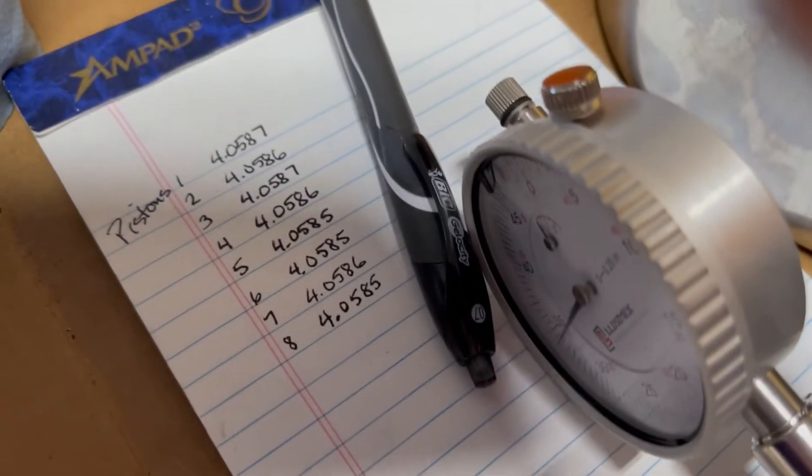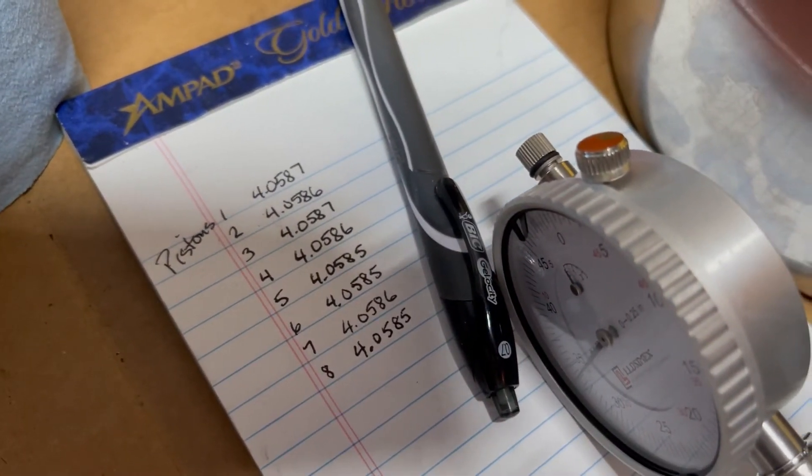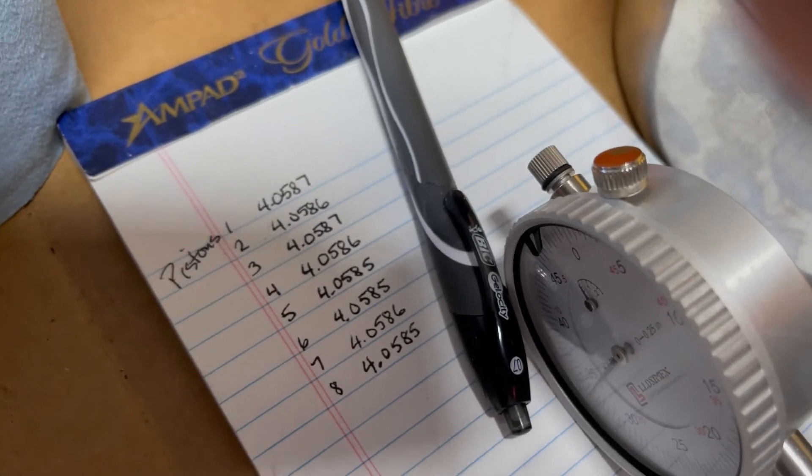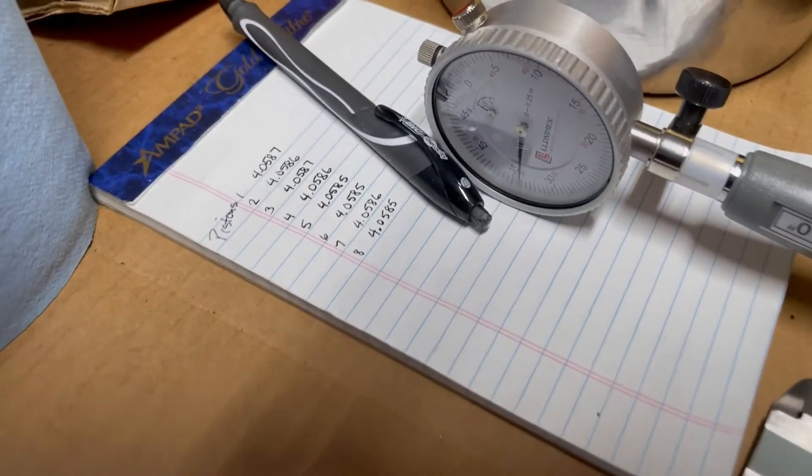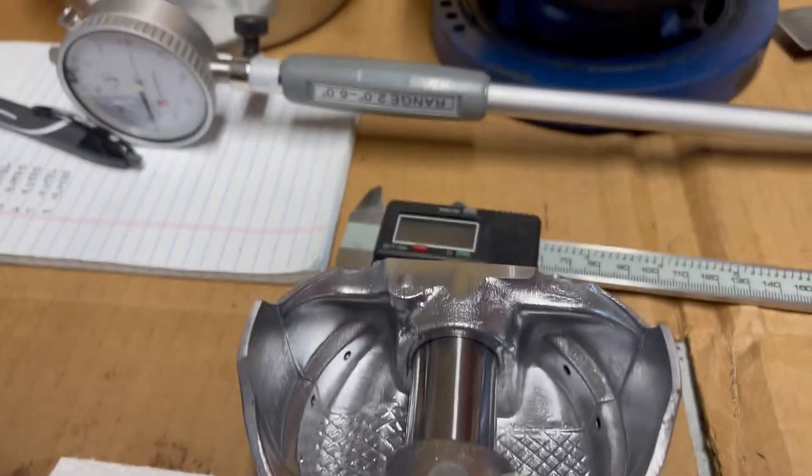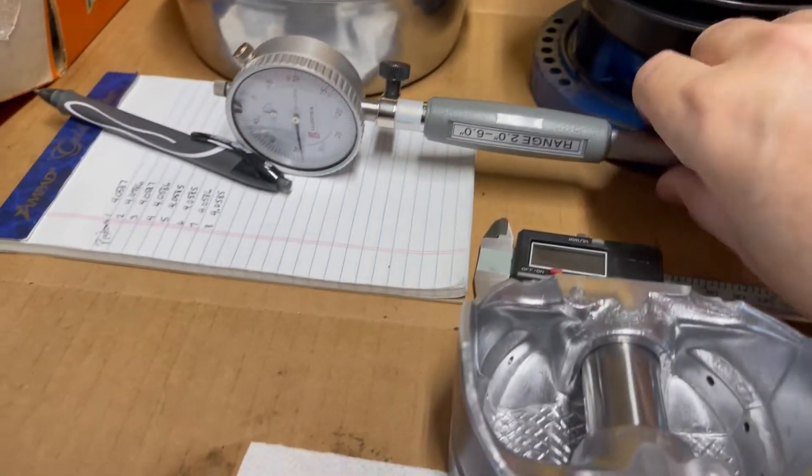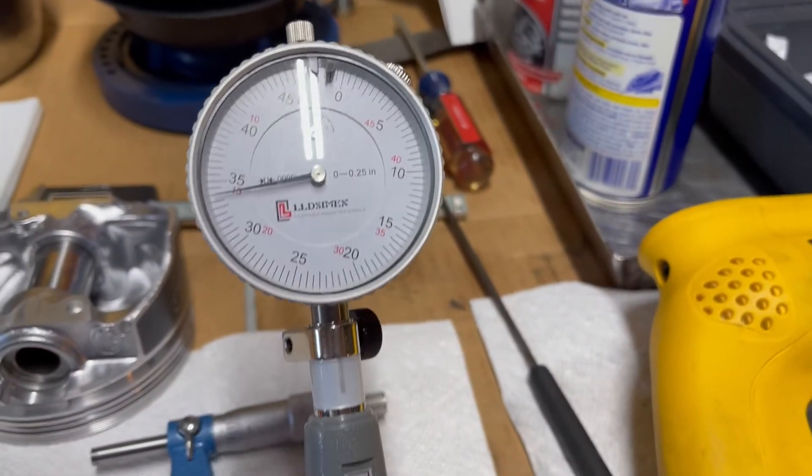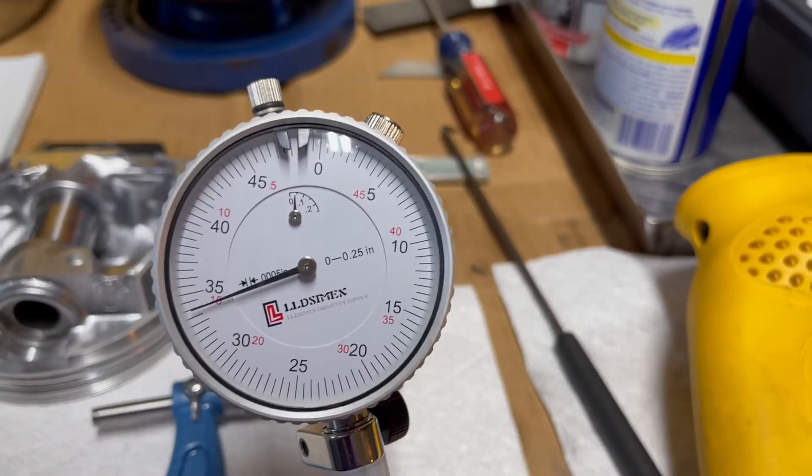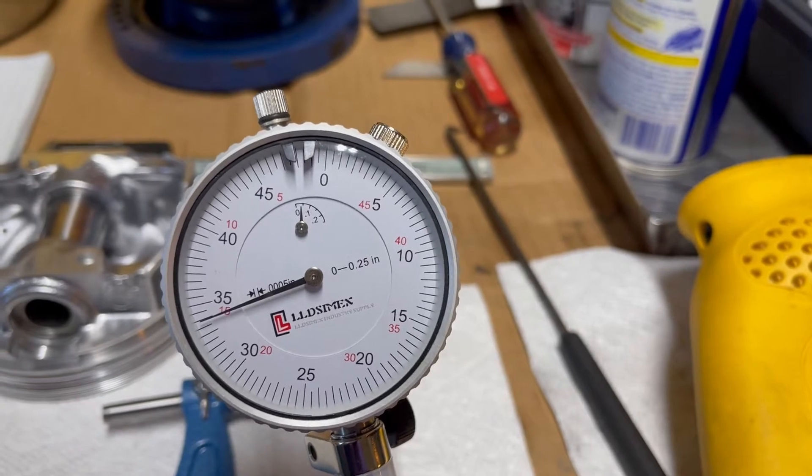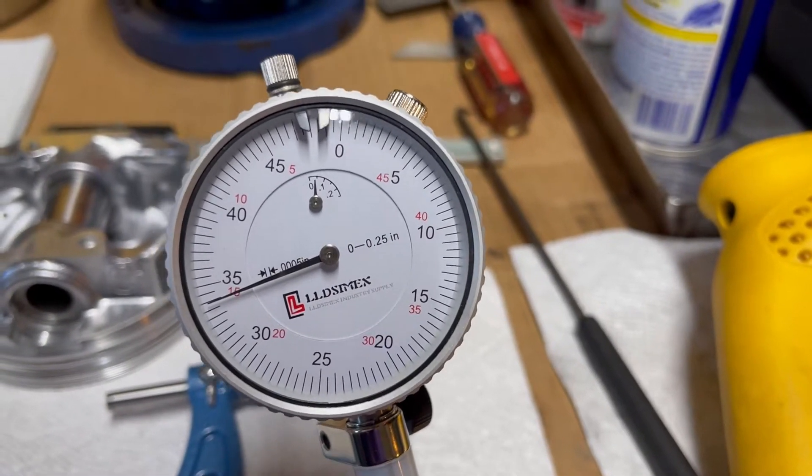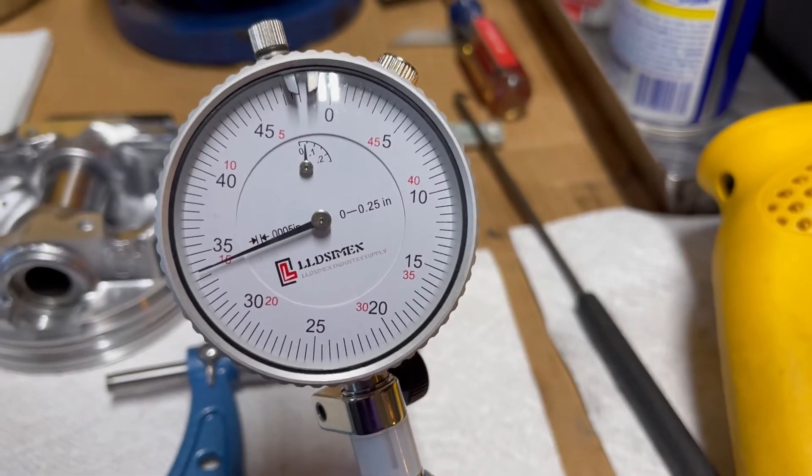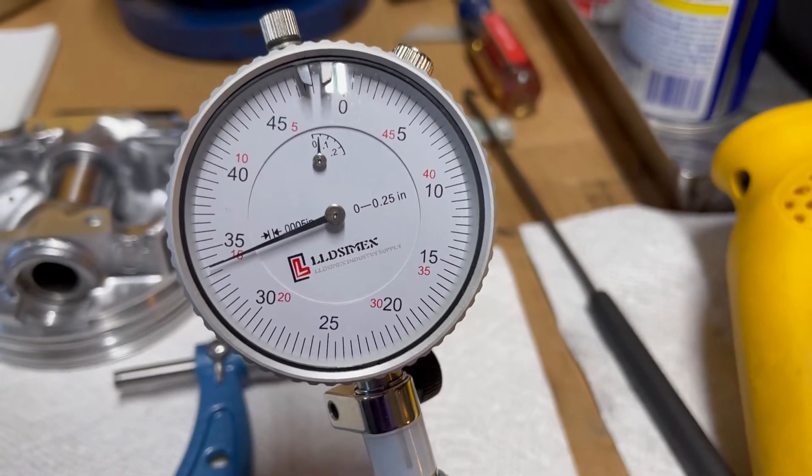I wrote down all the different measurements. They're all within two ten thousandths. So that's as close as I can measure. So then I set my caliper at zero. So what I'm looking for, not my caliper, my bore gauge. What I'm looking for is 1.5 to 2 thousandths clearance. That's what the manufacturer suggests.